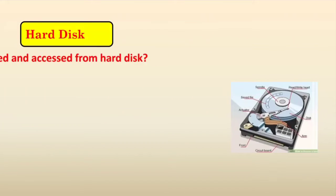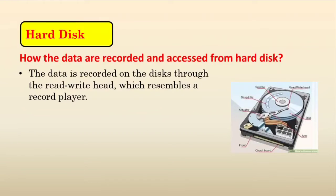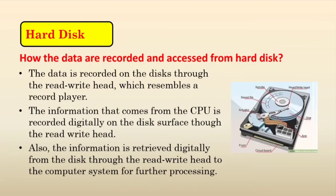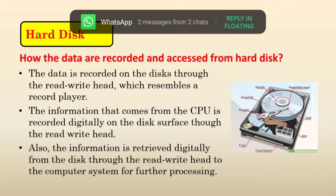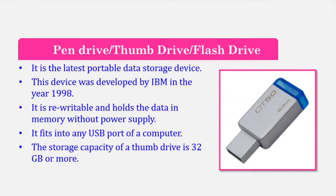Now we discuss how data is recorded and accessed from a hard disk. The data is recorded on the disk through the read-write head, which resembles a record player. Information from the CPU is recorded digitally on the disk surface through the read-write head, and information is also retrieved digitally from the disk through the read-write head to the computer system for further processing.